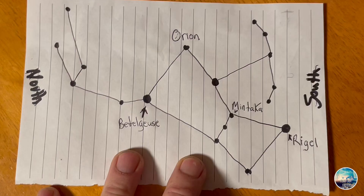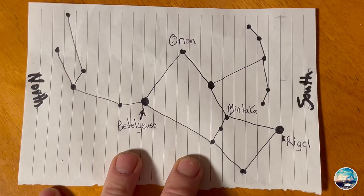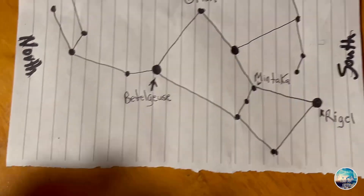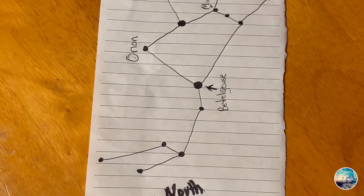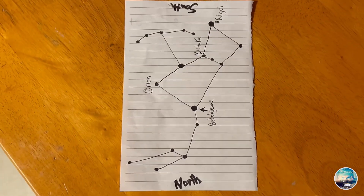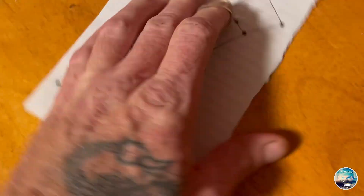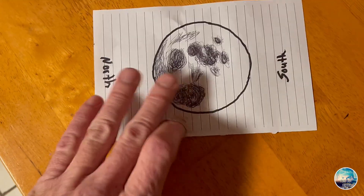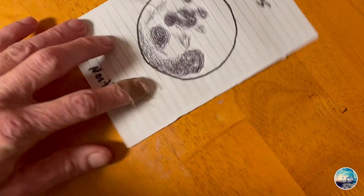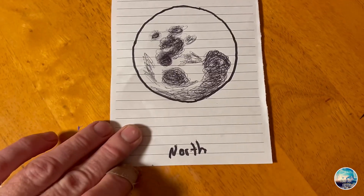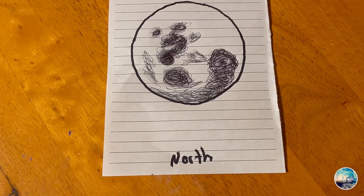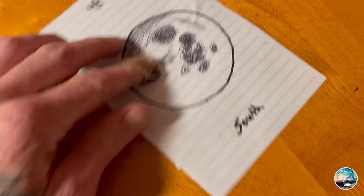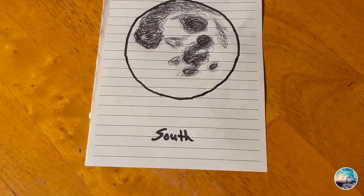I've done a rough drawing of the belt of Orion, and on each side of the paper I've written 'north' on one side and 'south' on the other side. On another piece of paper I've done the same thing with the moon — I've written 'north' on one side and 'south' on the other side.